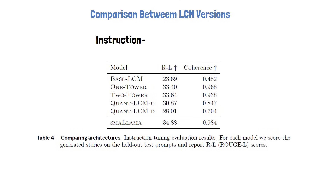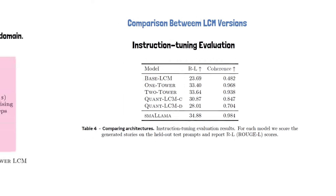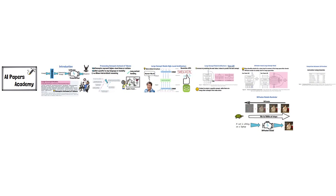Comparing the different versions of large concept models, the diffusion-based versions significantly outperform the others on two reported metrics: ROUGE-L, which evaluates summary quality by measuring the longest common subsequence between generated and reference text, and a coherence metric, which evaluates how logically consistent and smoothly flowing the generated text is. At the bottom of the table, we see that a small LLaMA achieves slightly better results than the diffusion-based large concept model versions. Thank you for watching and stay tuned for more reviews of AI papers.